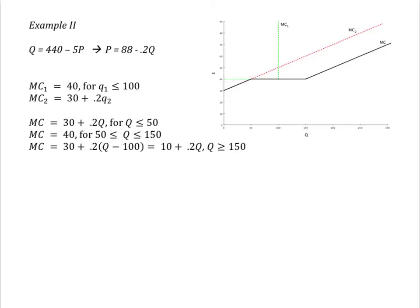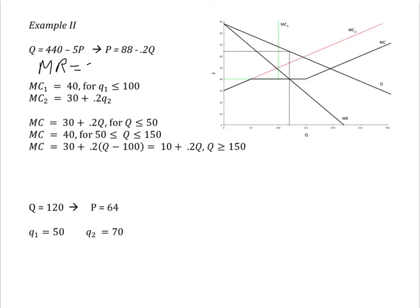So we need to impose demand on our diagram. We find marginal revenue equals 88 minus 0.4Q, and equate it to marginal cost. Since marginal revenue crosses marginal cost in the middle segment,